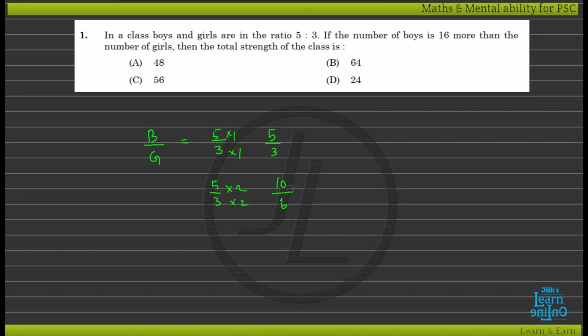The ratio of boys and girls is 5 to 3. Given the condition, boys exceed girls by 16.